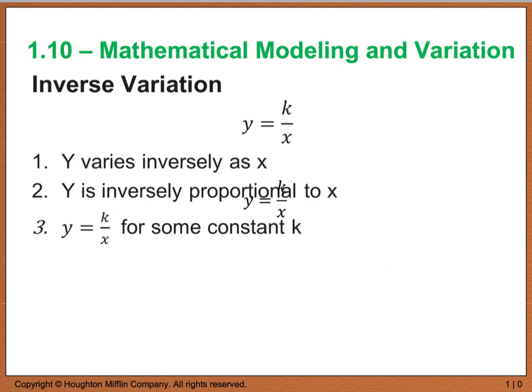Another type of variation that we have is called inverse variation, and this looks something like y equals k divided by x. Now sometimes, you will see this written as xy equals k. Personally, I will always go and isolate the y variable, so that it's easier, for me anyways, to tell if it's direct or inverse. This is read, y varies inversely as x, or y is inversely proportional to x. And k is, again, some constant.